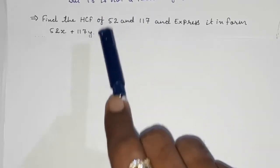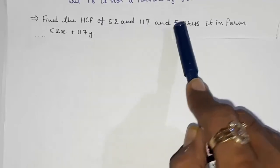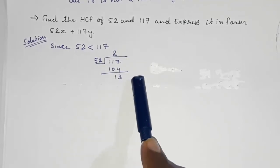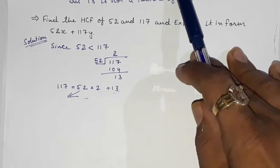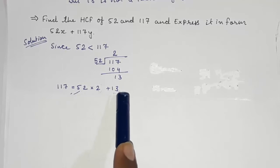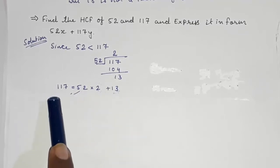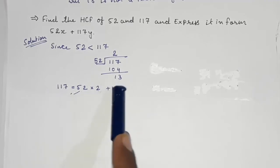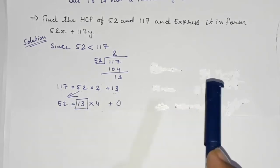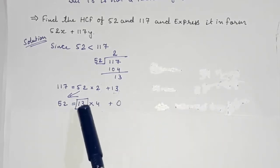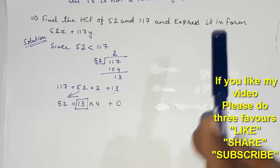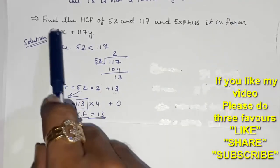Since 117 is greater, divide 117 by 52. We get 52 × 2 = 104 and remainder 13. So: 117 = 52 × 2 + 13. Now divide 52 by 13: 13 × 4 = 52 and remainder is 0. Since remainder is 0, HCF is 13.